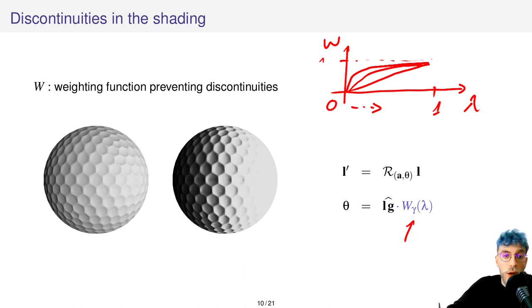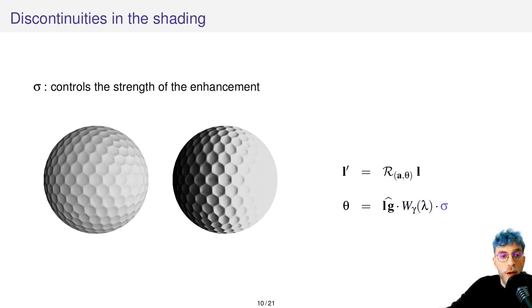We also introduce a user parameter sigma that controls the strength of the enhancement. It is what the artist will tweak to enhance the shape.